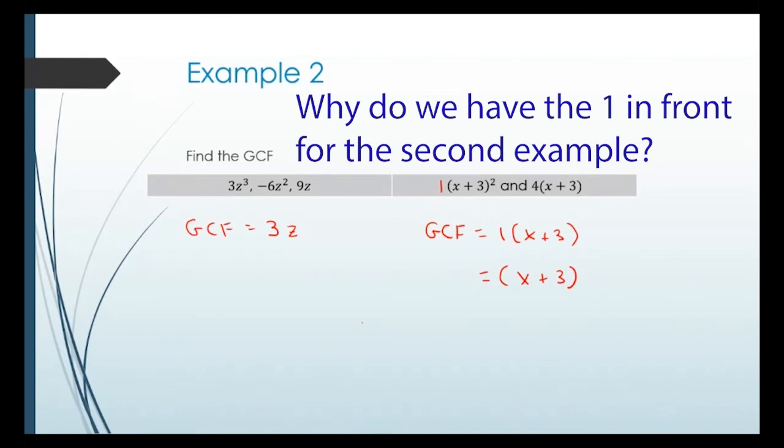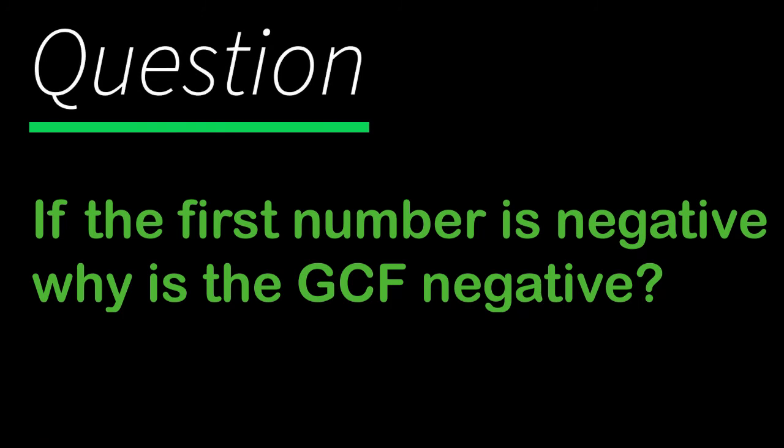When comparing 1 and 4, one is the largest thing you can divide out. Generally when factoring, we like to have positive terms in front. So when the first term is negative, we factor out a negative GCF to make everything inside the parentheses start with a positive — it makes further factoring much easier.